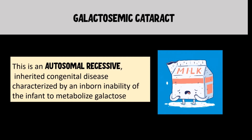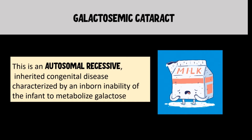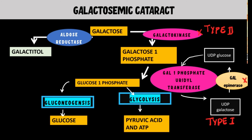First let us talk about the galactosemic cataract. These are the bilateral cataracts seen in galactosemia. Galactosemia is an autosomal recessive inherited congenital disease characterized by an inborn inability of the infant to metabolize galactose — they can't really process milk. The galactosemic cataract requires understanding galactose metabolism. Galactose is metabolized into glucose through three important enzymes: galactokinase, galactose-1-phosphate uridyl transferase, and galactose epimerase.